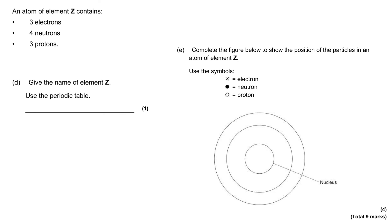An atom of element Z contains three electrons, four neutrons and three protons. Give the name of element Z. Use the periodic table to help you.